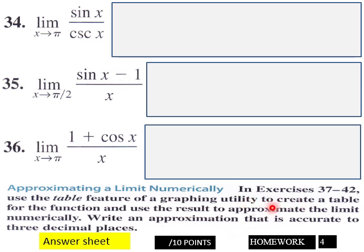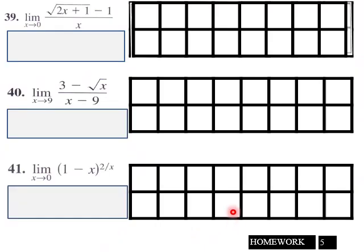Then we go into Page 5, use the table feature of a graphing calculator to create a table for the function. And then use the result to approximate the limit numerically, write an approximation that is accurate to 3 decimal places. So that goes into here. Here's your tables here for that one. You got 12 points here, Page 5.